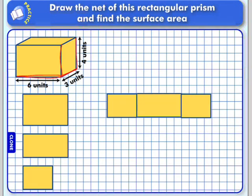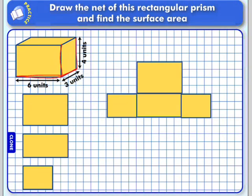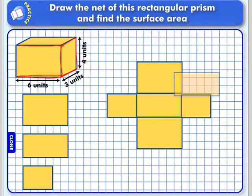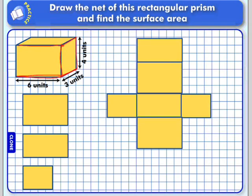This lateral face would be six by four, and we'll need two of those. And then last but not least, we need our top. The top is six by three. I could put it in different positions — that would be fine. So there's one possible net for our rectangular prism.